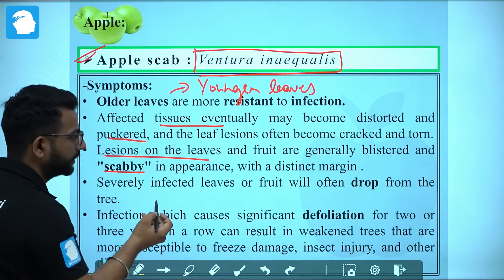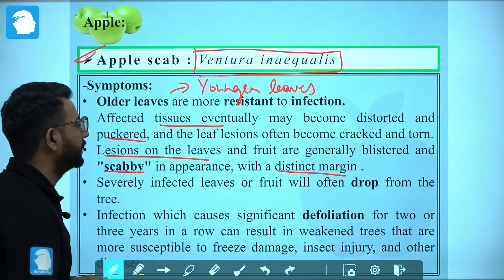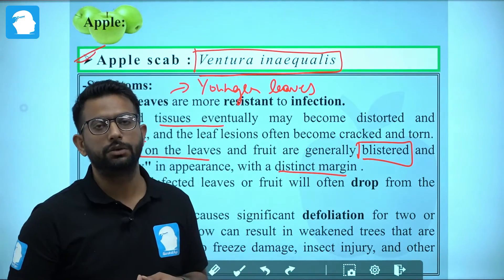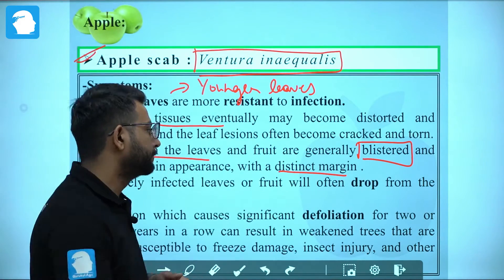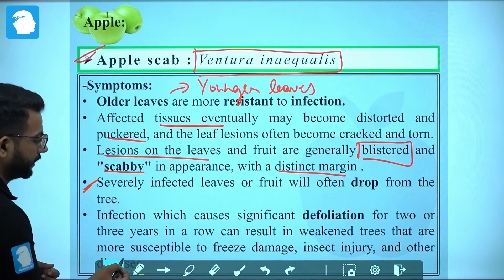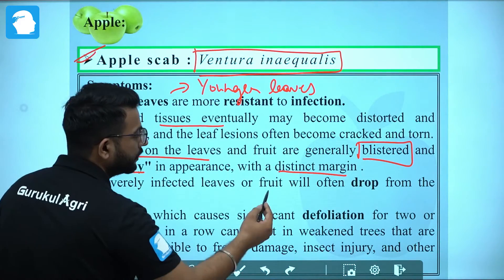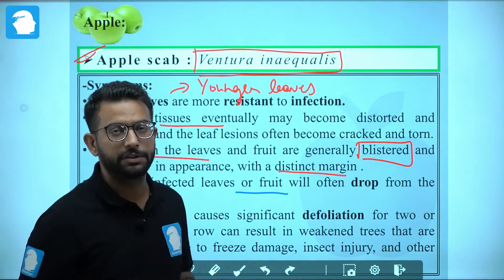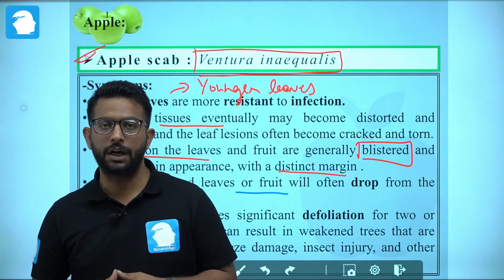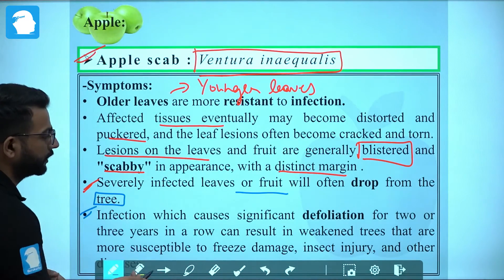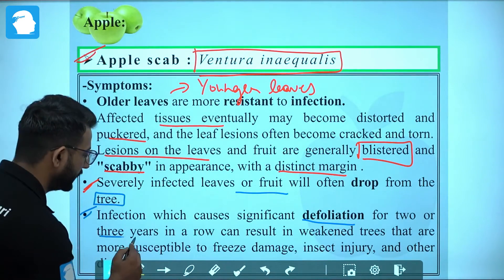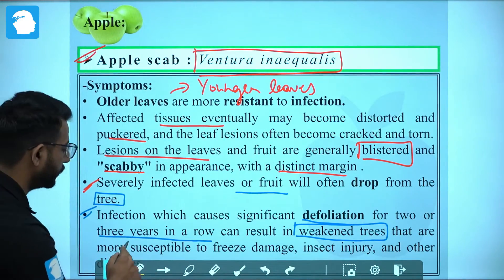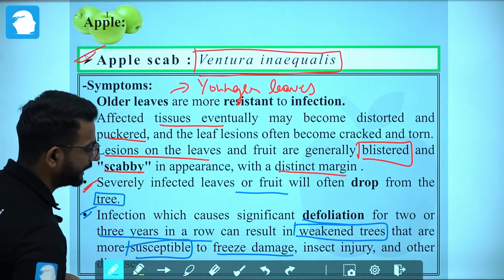The lesions on leaves and fruits are generally blistered and scabby in appearance with distinct margins. In severely infected cases, leaves and fruits will often drop from the tree. Ultimately, when infection is severe, there will be significant defoliation for two or three years in a row, which can result in weakened trees that are more susceptible to freeze damage, insect injury, and other diseases.